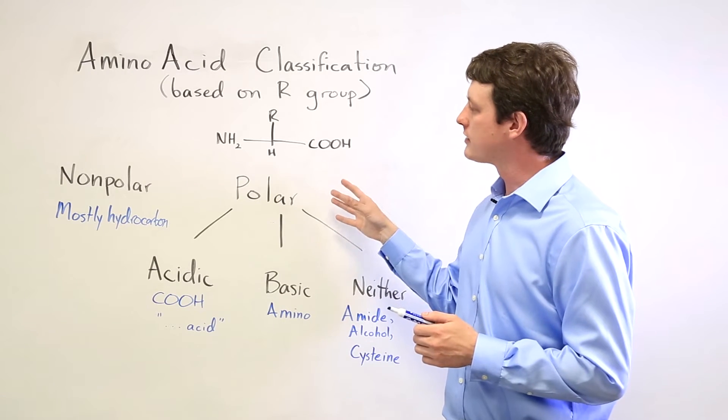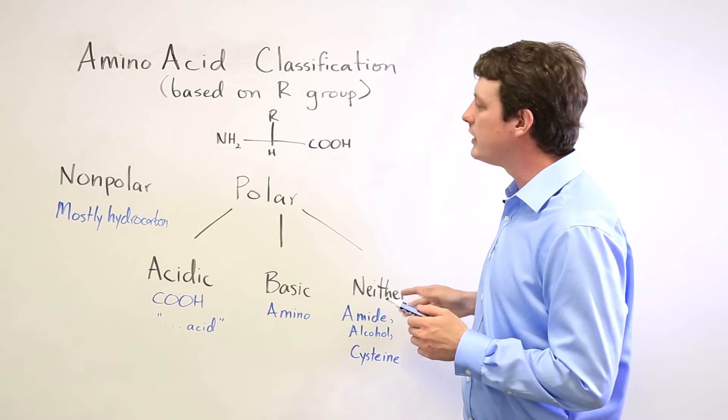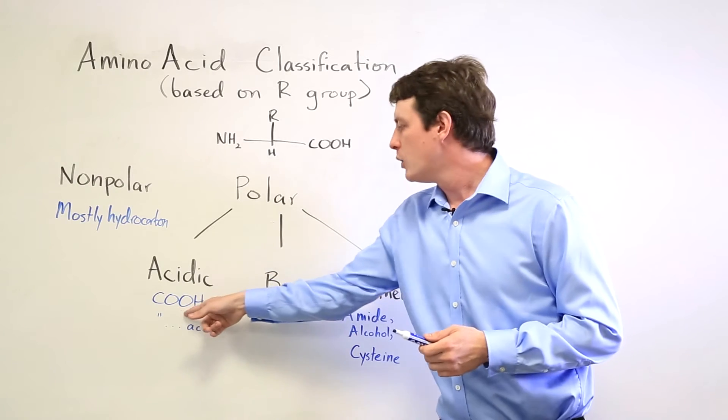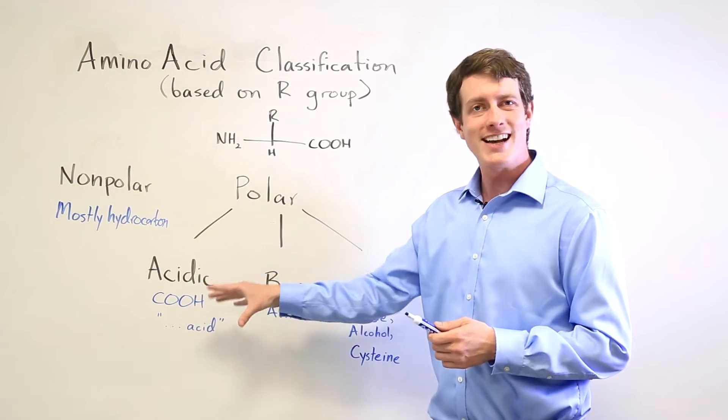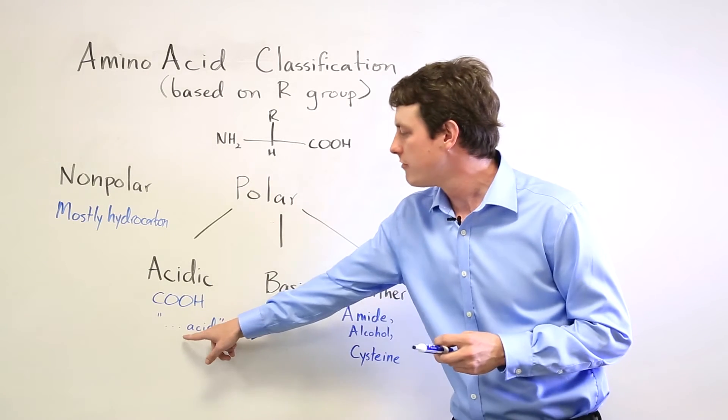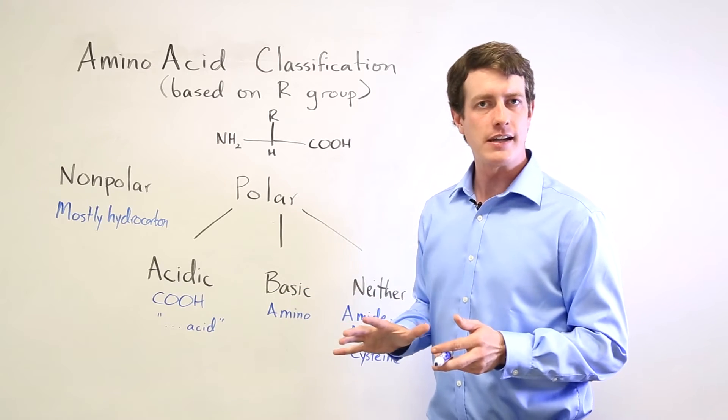The polar ones can be separated into three groups. The acidic ones have a COOH group, a carboxylic acid in the side chain, and you'll recognize those because the amino acid will have blank acid as its name.